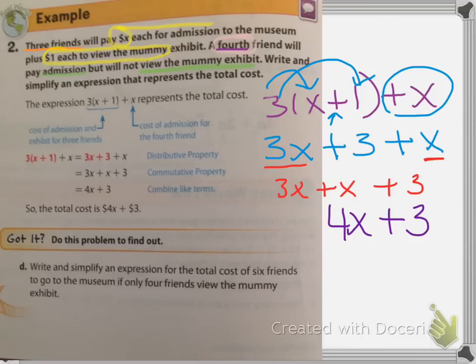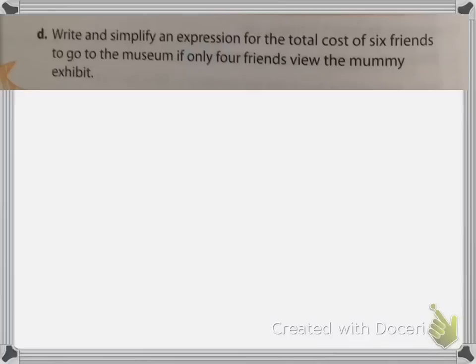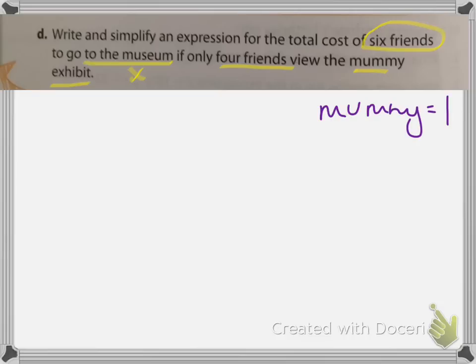What I'd like you to do now is try D on your own and pause the video. When I go to the next slide, I will go over D. All right, so now you've had a chance to try D. For D, it says to write and simplify an expression for the total cost of six friends to go to the museum. Remember, the museum was x dollars. If only four friends view the mummy exhibit — and remember, the mummy exhibit was $1 — six friends is going to go on the outside of the parentheses, and inside the parentheses is the cost of the museum.